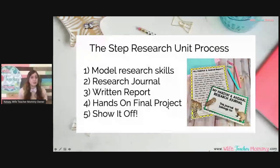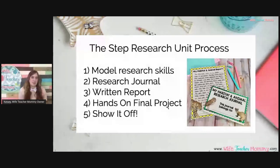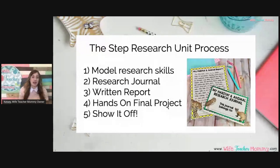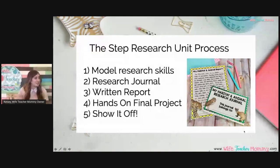Let's go over those steps again. First, we model those research skills: how to use the library, find books, use the table of contents and index, find credible sources, and how to search on the internet — all explicitly taught. Number two is the research journal, where they focus on one question per day and make their way through the unit. Step three is taking information from the research journal and writing a written report. Step four is a hands-on, fun, engaging final project such as a habitat in a shoebox or a paper mache planet. Number five is to show it off.